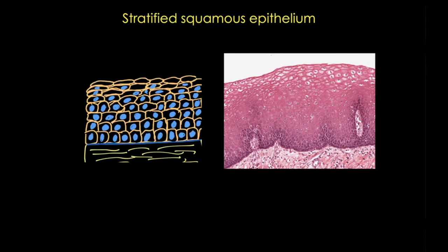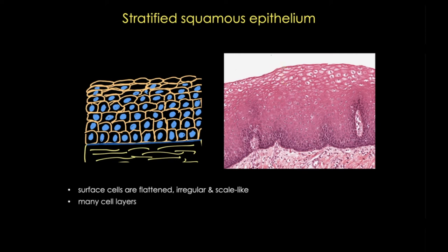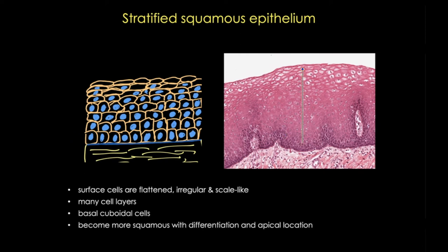Stratified epithelia are classified according to the cell shape of the surface layer — that apical layer. In the case of stratified squamous epithelium, the surface cells are thin with a scale-like or squamous shape. This tissue also has many cell layers, with basal cuboidal cells that become progressively more squamous as they differentiate and move toward the apical surface.